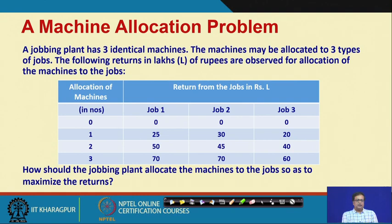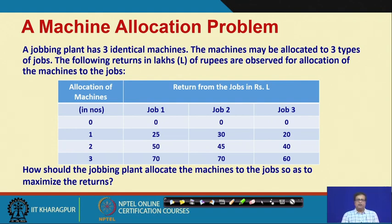We can allocate 0 machines, in which case the jobs give no return. If we allocate only one machine to job 1, we get a return of 25. If we allocate 2 we get a return of 50, and if we allocate all three machines then 70 would be the return. For job 2 the returns are 0, 30, 45, and 70. For job 3 the returns are 0, 20, 40, and 60. How should the jobbing plant allocate the machines to the jobs so as to maximize the return?